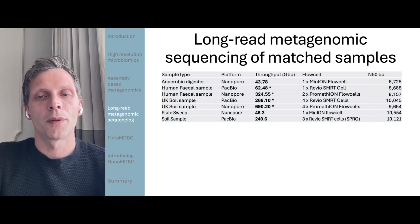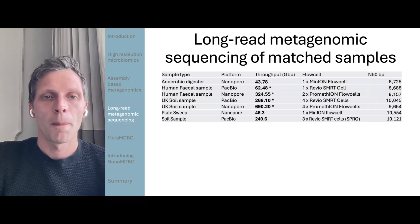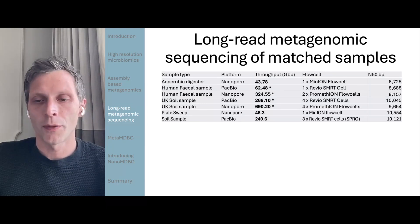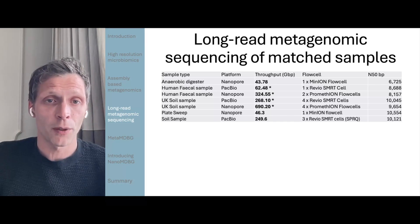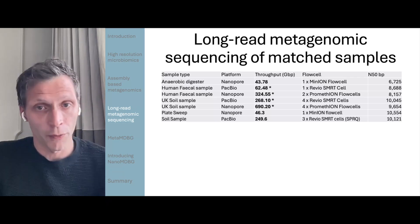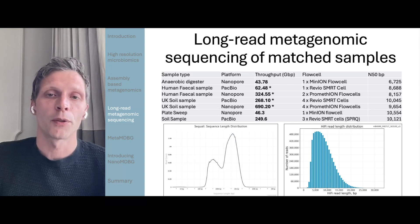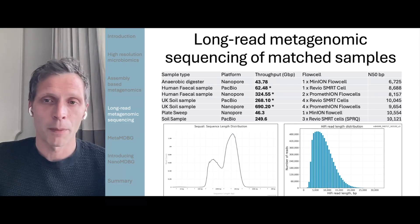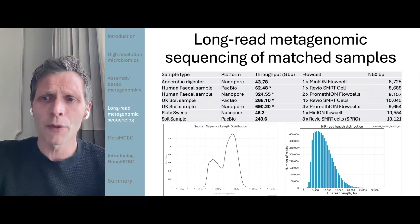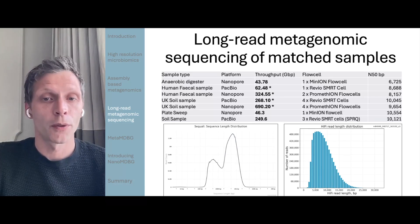Here are some estimates of throughput from a range of different samples across a range of different sequencing platforms. We initially started designing some of these protocols on anaerobic digester samples for the development of these assemblers. We actually used paired samples of human faecal samples and paired UK soil samples so that we could run a comparative analysis on different platforms. One thing to take note of is that the throughput of a Promethion flow cell is far greater than the throughput of a PacBio Revio SMRT cell, even with the SPRQ chemistry. Everything's got a nice N50 of between 8 to 10 kb, which is very important for assembly through areas of genetic homology.